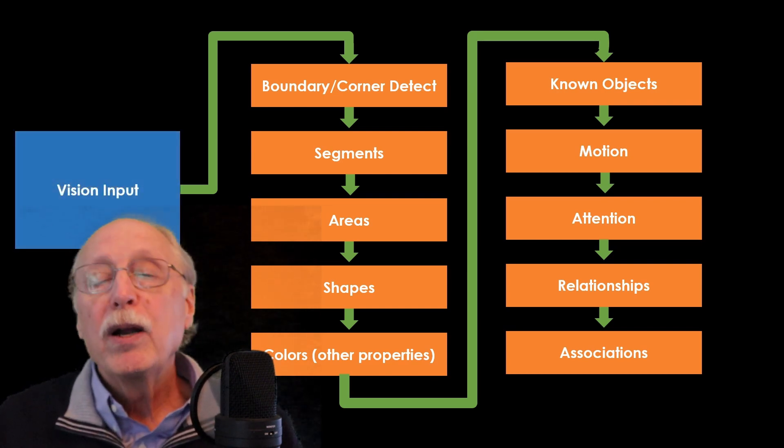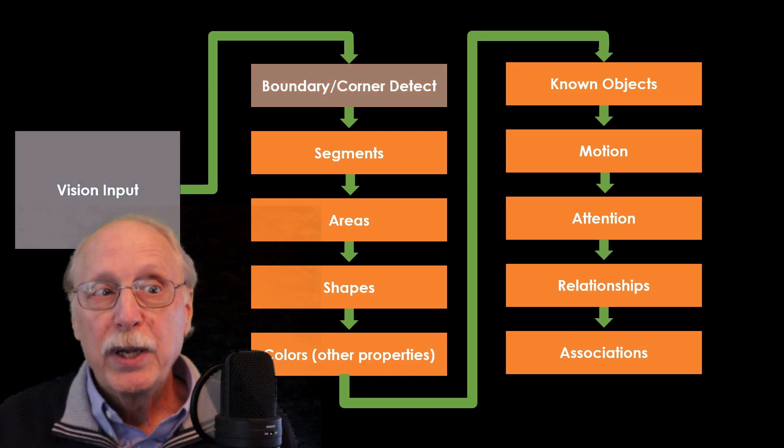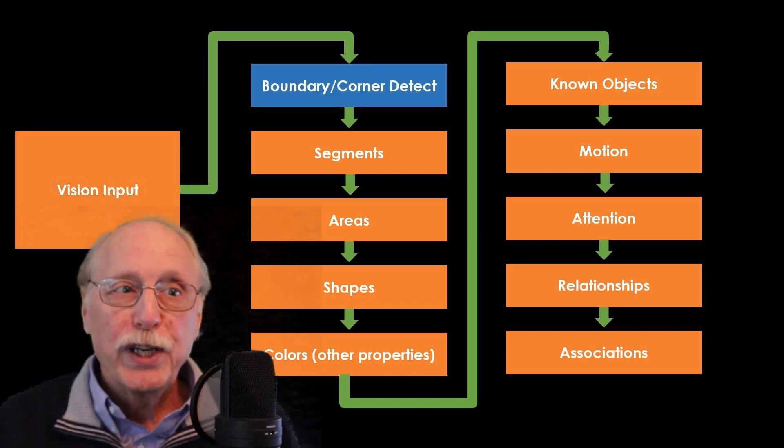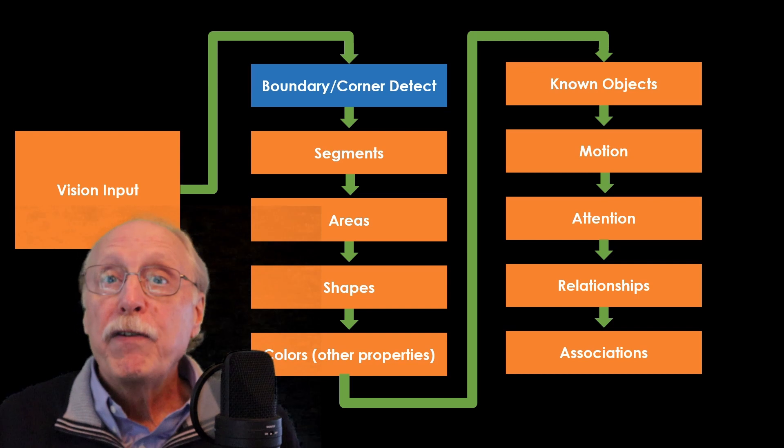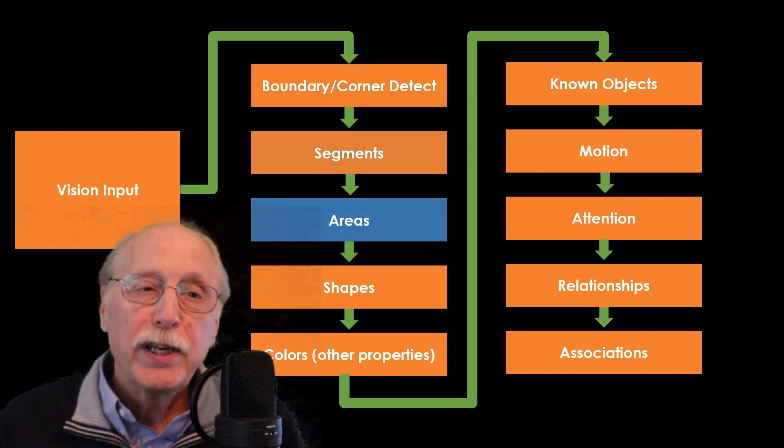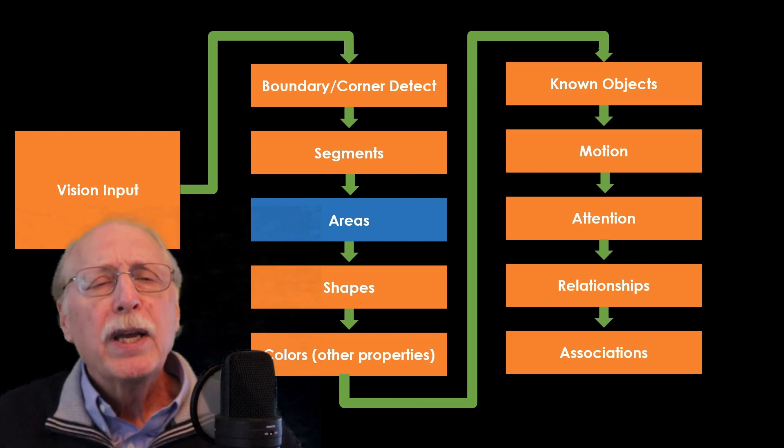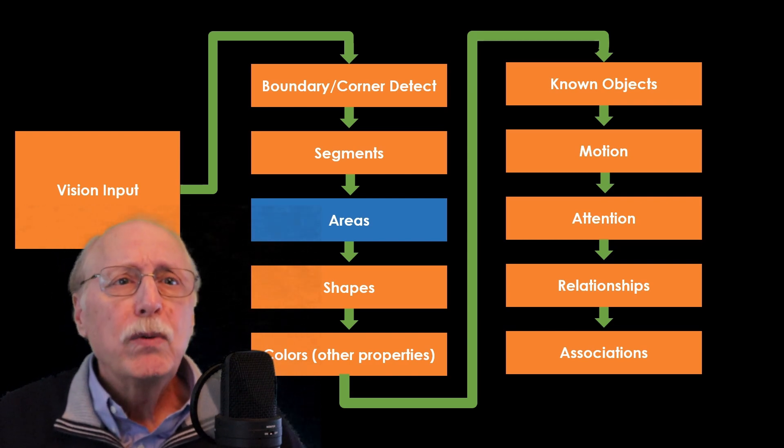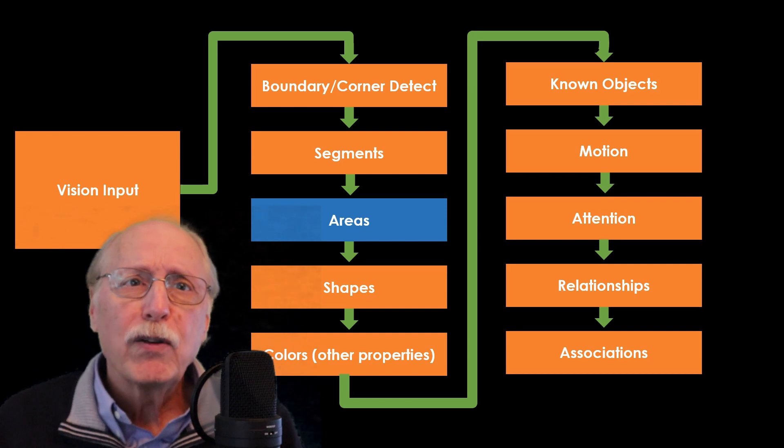The steps I'll describe are vision input, boundaries and corner detection, finding segments, merging segments into defined areas. Before continuing, these steps correspond to classic computer vision algorithms.